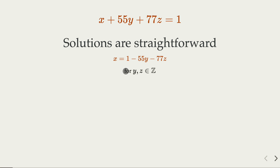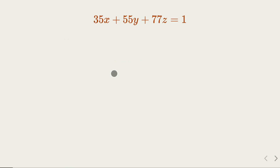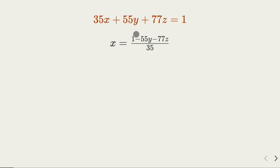Of course, in our case it's not that simple — the smallest coefficient is 35, with no 1 among the coefficients. But it turns out we can move toward that form. We choose the coefficient with smallest absolute value, which is 35, and express x in terms of the other values. Since 55 = 35 + 20 and 77 = 35×2 + 7, we can split out the integer parts.